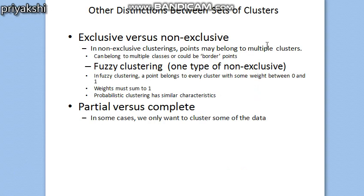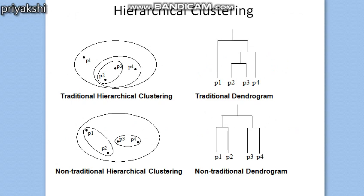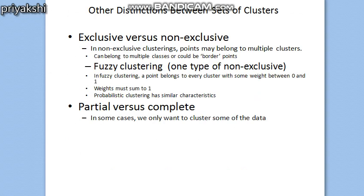Next we will see what is exclusive and non-exclusive clustering. The clustering shown in the previous figures are all exclusive because they assign each object to a single cluster. However, there are many situations in which a point could reasonably be placed in more than one cluster, and these situations are better addressed by non-exclusive clustering. In the most general sense, an overlapping or non-exclusive clustering is used to reflect the fact that an object can simultaneously belong to more than one cluster at a time.